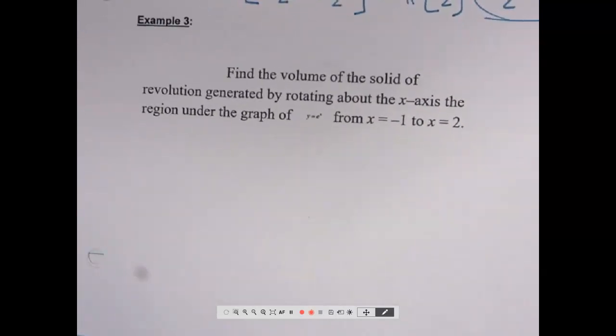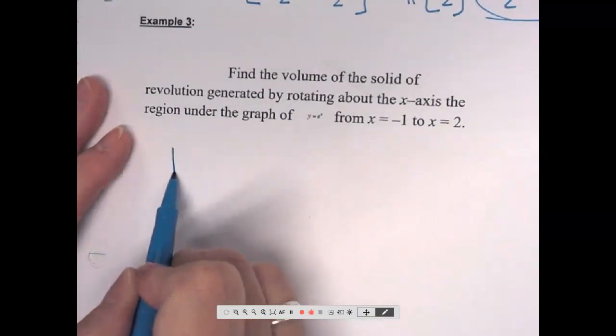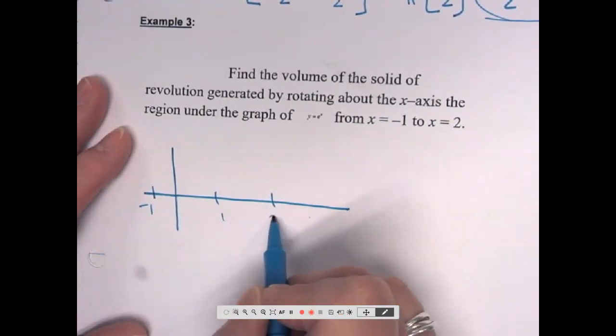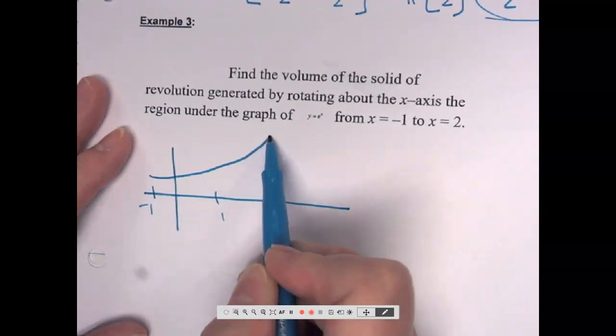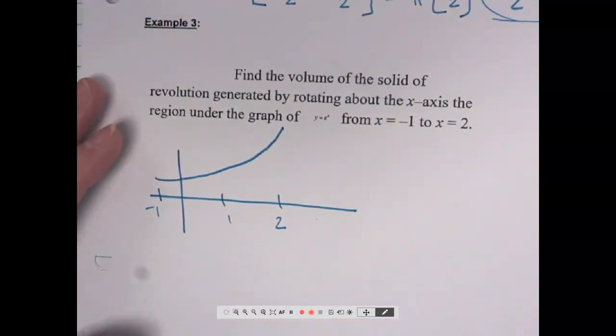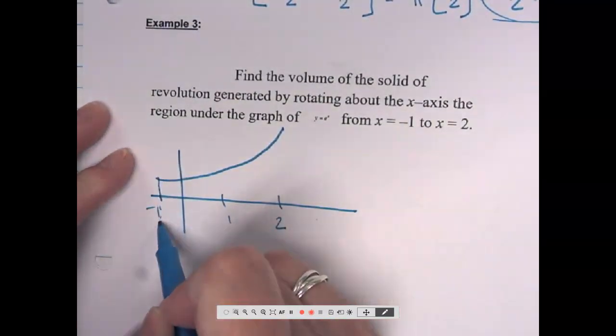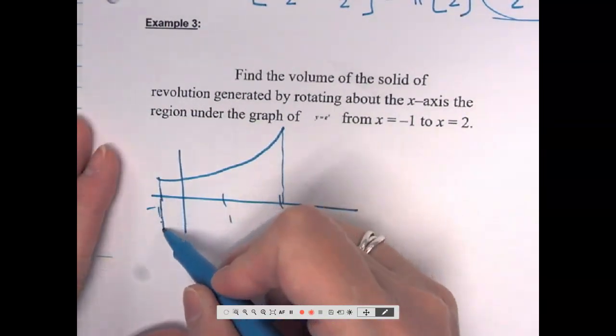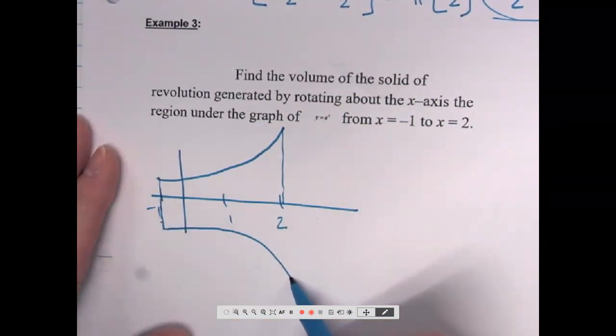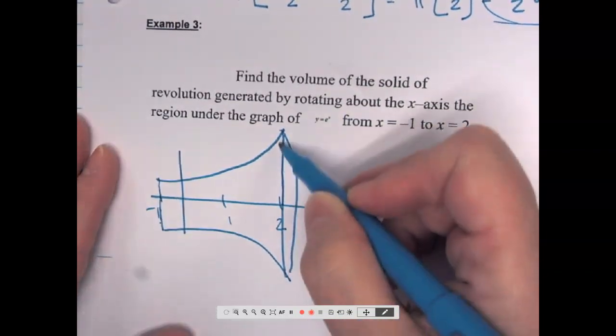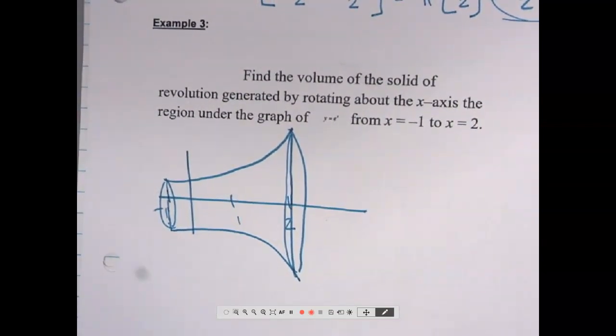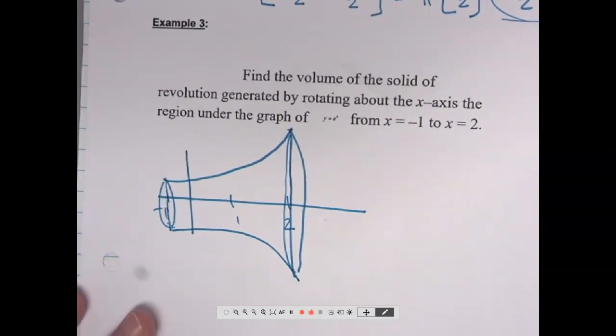So find the volume of the solid of revolution generated by rotating about the x-axis, the region under the graph of y equals e to the x from negative 1 to 2. Exponential curve, but we just have this tiny little piece of it. So we're going to have, when I take this shape here and spin it about the x-axis, then I'm getting this reflection down here into a 3D shape. Kind of like a megaphone. A piece of a megaphone, anyway.